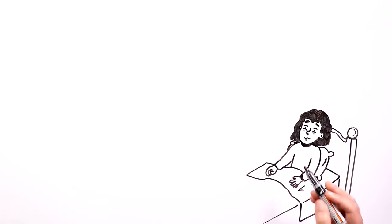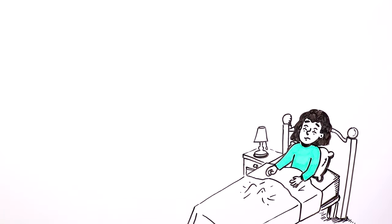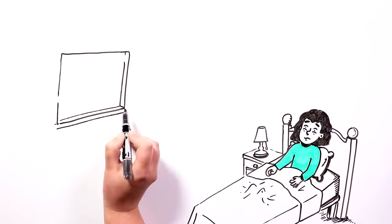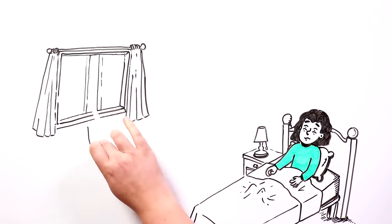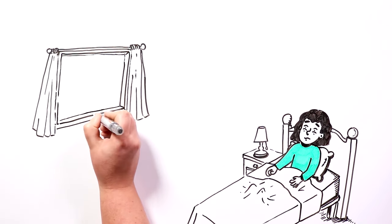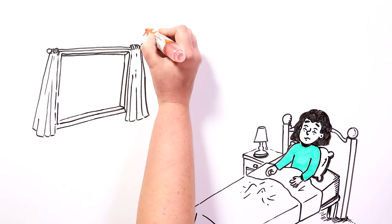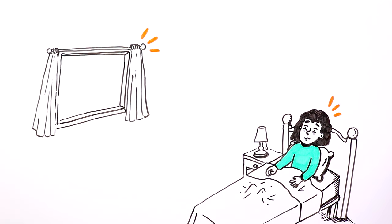Maria woke up in the middle of the night after having a nightmare. When she opened her eyes, she heard how the wind was getting through the windows. She remembered closing them before going to bed, so she didn't understand how they could have just opened on their own. She closed them and went back to bed.